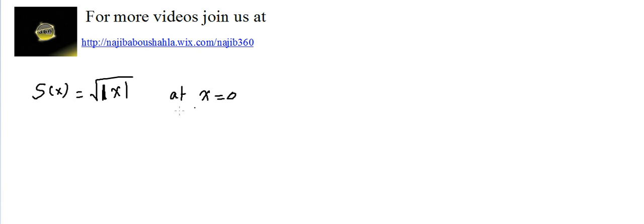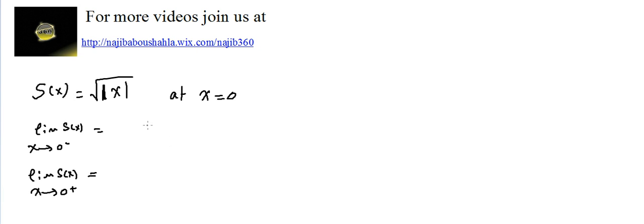First, to find the continuity, we need to find if the limit of f of x as x tends to 0 minus should be equal to the limit of f of x as x approaches 0 plus, and both should be equal to f of 0.